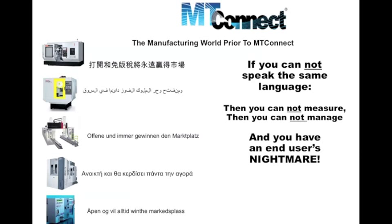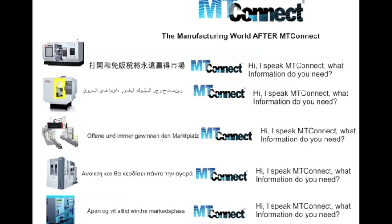The end user's nightmare also includes that not all vendors would provide all the information — sometimes called 'I have a secret' in the industry — where you can't get all the information because the vendor sends in their super expensive $325-an-hour manufacturing professional services person who spends a few weeks and very graciously opens up information you should just have access to. This is really not how to drive productivity. This is the antithesis of what happens in the computer industry and just an absolute nightmare for end users. Monitoring equipment did exist, but it had to come up with a different type protocol for every machine tool — tens or hundreds or thousands of different device drivers.